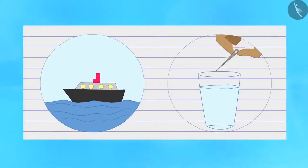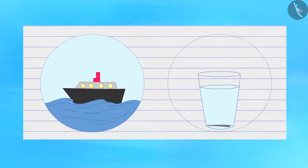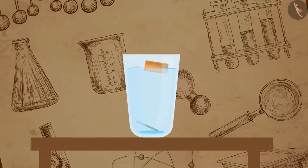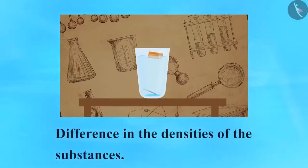Now let's do another activity to find out why a substance floats or sinks when placed on the water surface. Take a glass filled with water and place a nail and a cork of equal mass on the surface. You will notice that the nail sinks while the cork floats on the water. This is because of the difference in the densities of the substances.